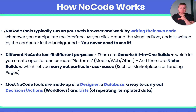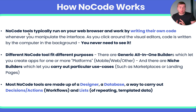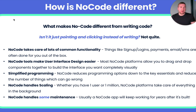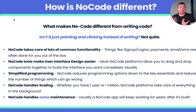A repeating data list is essentially taking the same template of the interface, the same look and feel, cloning it over and over again, but putting different data in each time. All of these concepts — the designer, database, workflows, and repeating data list — fall under what we call the fundamental four pillars of NoCode. Let's talk about why NoCode is actually different from writing code.